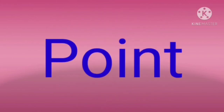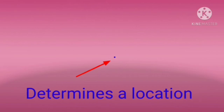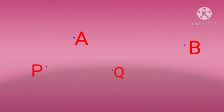The first one is point. What is a point? A point is nothing but a small dot. A point determines a location. It is the sharp tip of a pencil marked as a dot. A point is usually denoted by a capital letter. With a sharp tip of the pencil, mark four points on a paper and name them by the letters A, B, P, Q, etc.